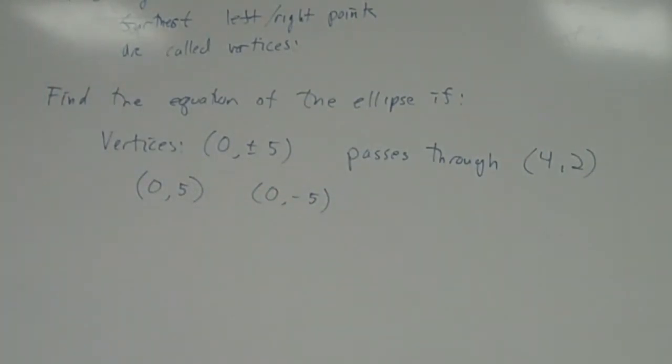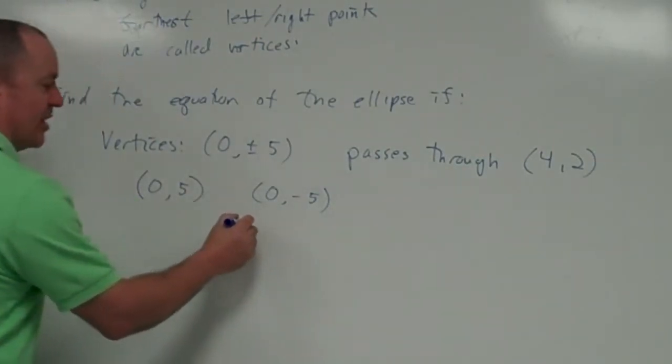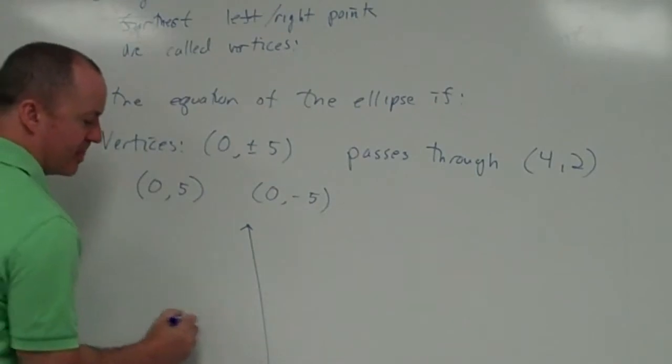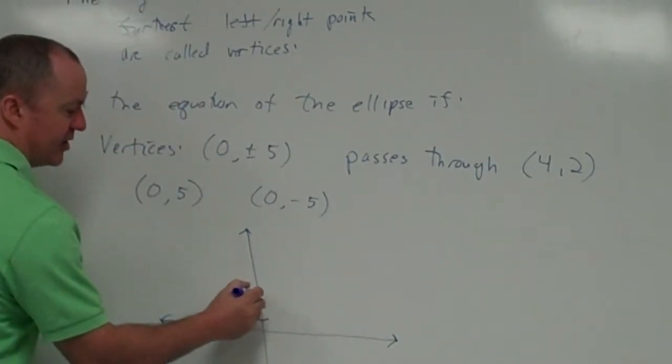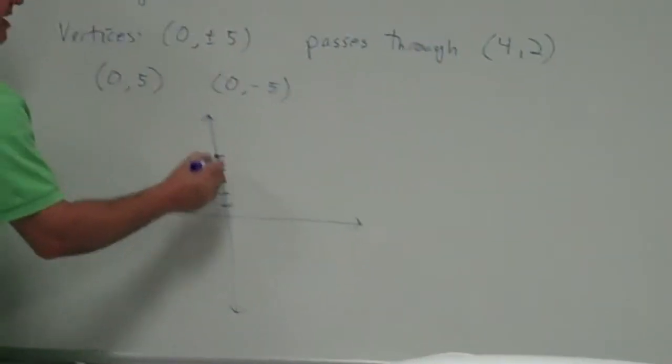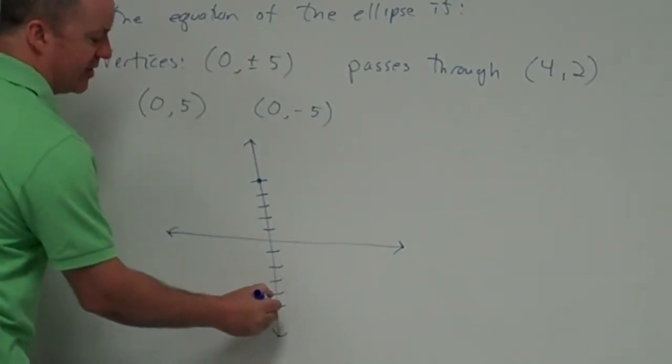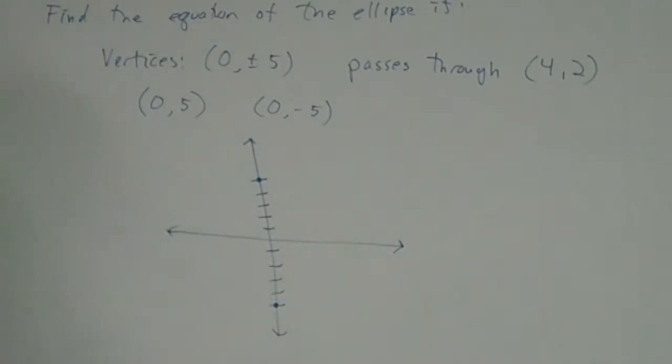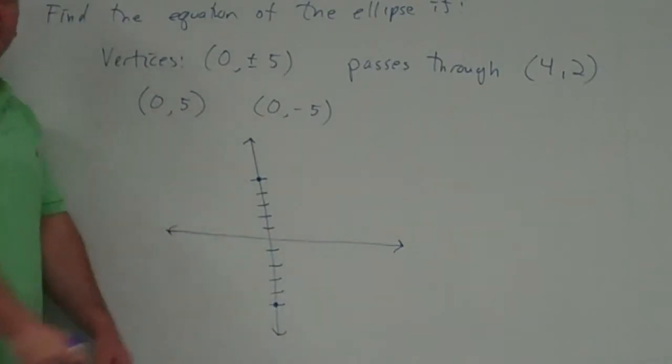The vertices are at the ends of one of the axes. So is this describing the horizontal or vertical axis? Vertical. Vertical. These are both on the y-axis. So I know one thing about this ellipse. It's 1, 2, 3, 4, 5. Its highest point is at 0, 5. Its lowest point is at 0, negative 5.